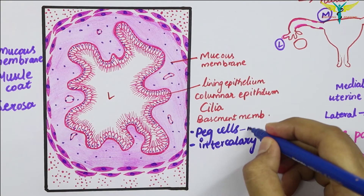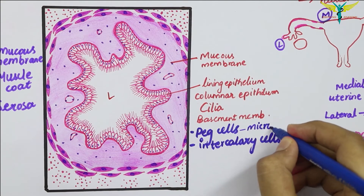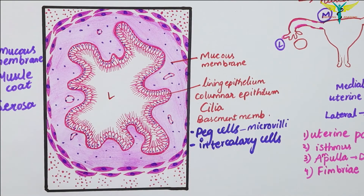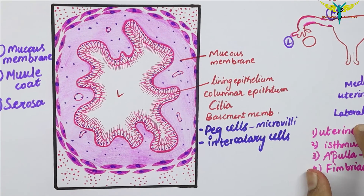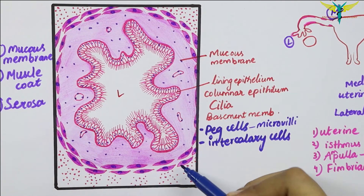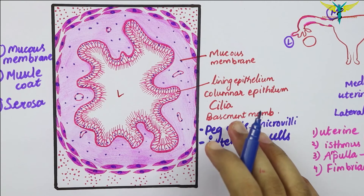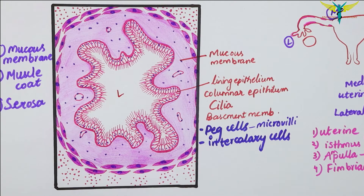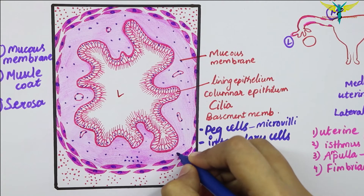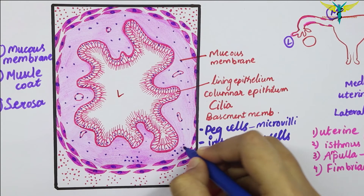These peg cells are secretory in nature and are not ciliated, whereas they contain microvilli. Another type of cell called the intercalary cell is also present. Now coming to the second layer — the muscle coat — which has an inner circular layer and an outer longitudinal layer of smooth muscle.